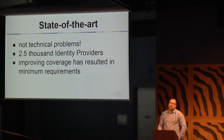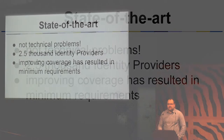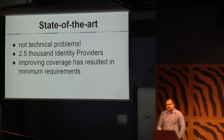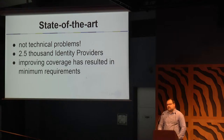What is the state of the art of the authentication and authorization infrastructure? The positive thing is that there are no real technical problems — usually they are configuration problems, or identity providers just lack knowledge or are very mistrusting and say nothing will be released. But these are not technical problems. There are thousands of identity providers in the world. In the Clarion Service Provider Federation there are around 1,500 identity providers, and here there are 2,500, including other inter-federations.